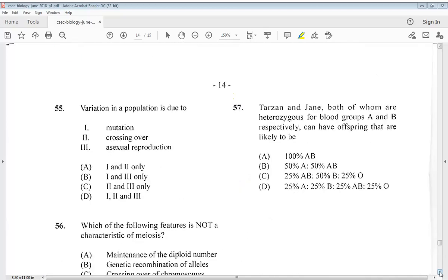Question 55. Variation in a population is due to 1. mutation, 2. crossing over, 3. asexual reproduction. So it would be 1 and 2. So that's A only.